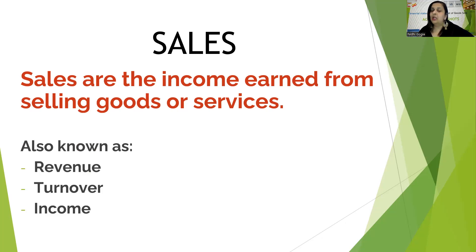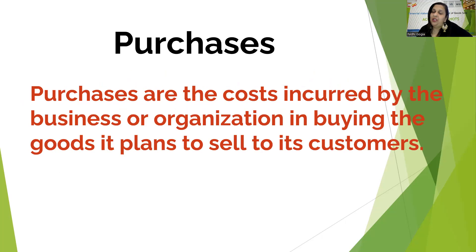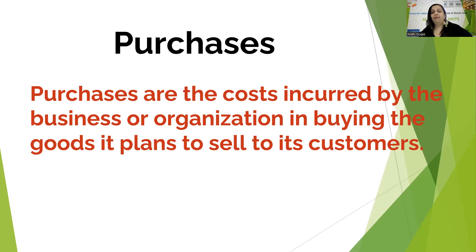The next important term is purchases. Purchases is the amount which the business incurs — it's like spending — to buy the goods which they sell to their customers. To make the sales happen, they need to do the purchases first. If you are a manufacturer, you are not going to purchase the finished goods directly, but you will purchase raw materials so that you can manufacture the goods and then sell to your customers. In short, purchases are the cost incurred by the business in buying the goods they sell to their customers to make the sales happen.